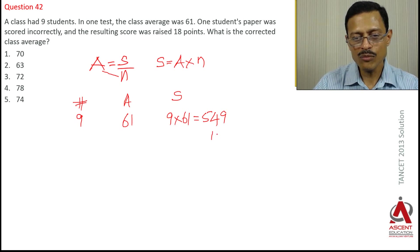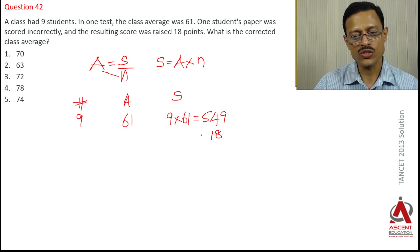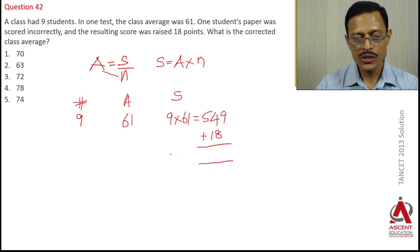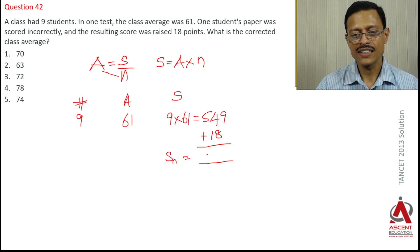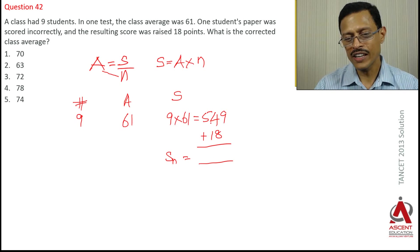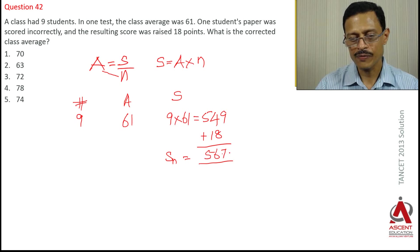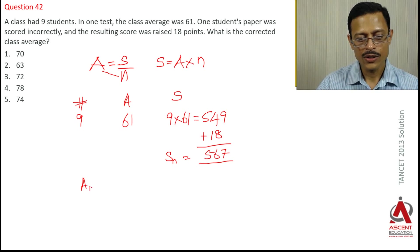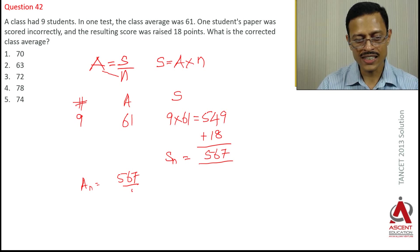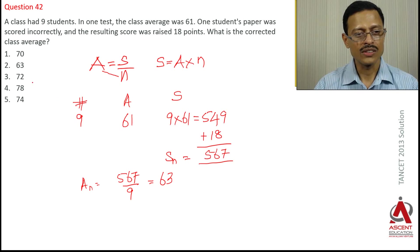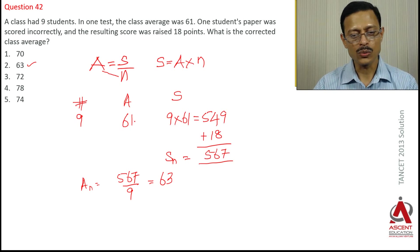You have added 18 more marks to the score given to one student. So the new sum is equal to 549 plus 18, which is equal to 567. That gives us the answer — choice number 2.